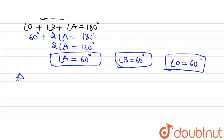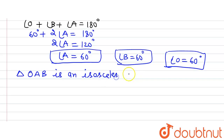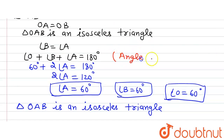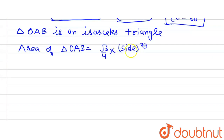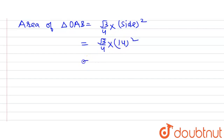Since all three angles are 60°, triangle OAB is an equilateral triangle. The area of an equilateral triangle equals (√3/4) × side². Since all sides equal the radius of 14 cm, the area = (√3/4) × 14² = 49√3 cm².